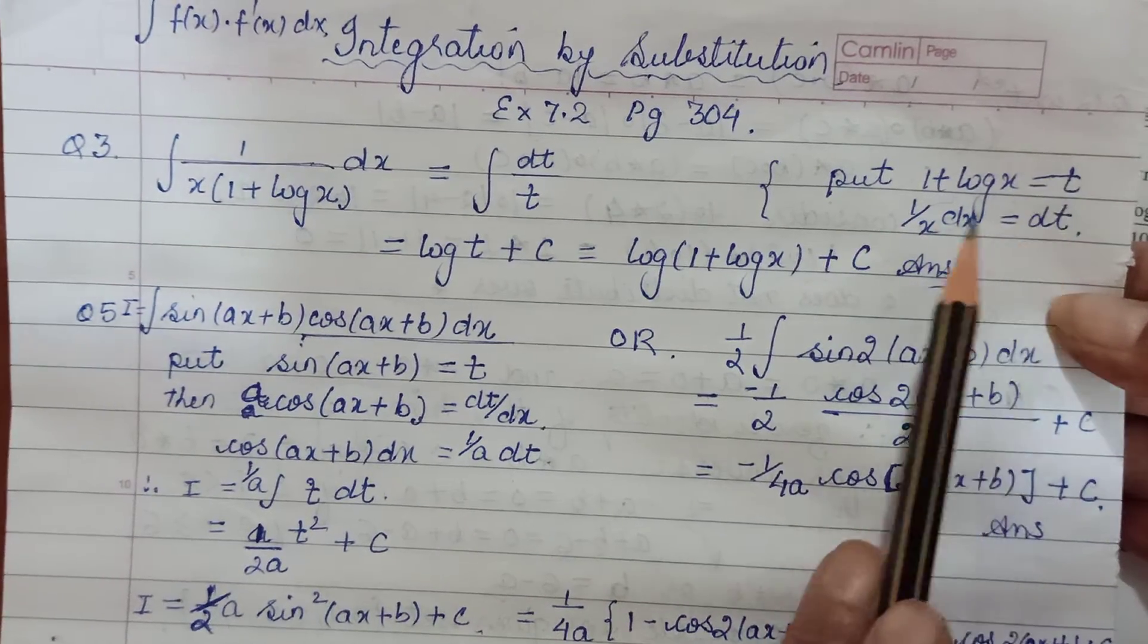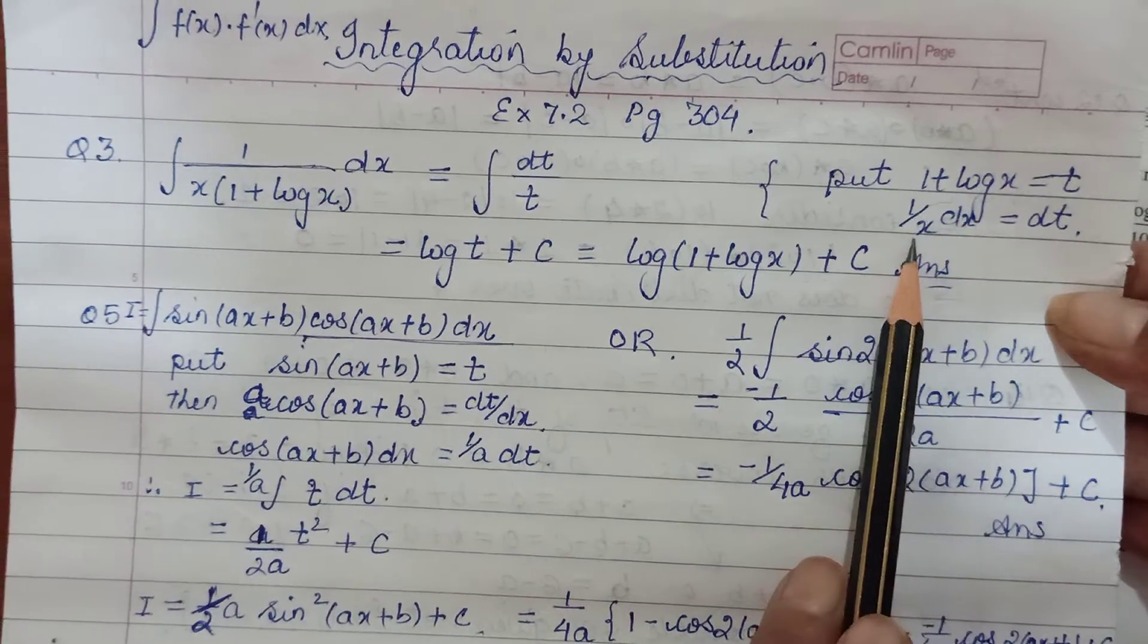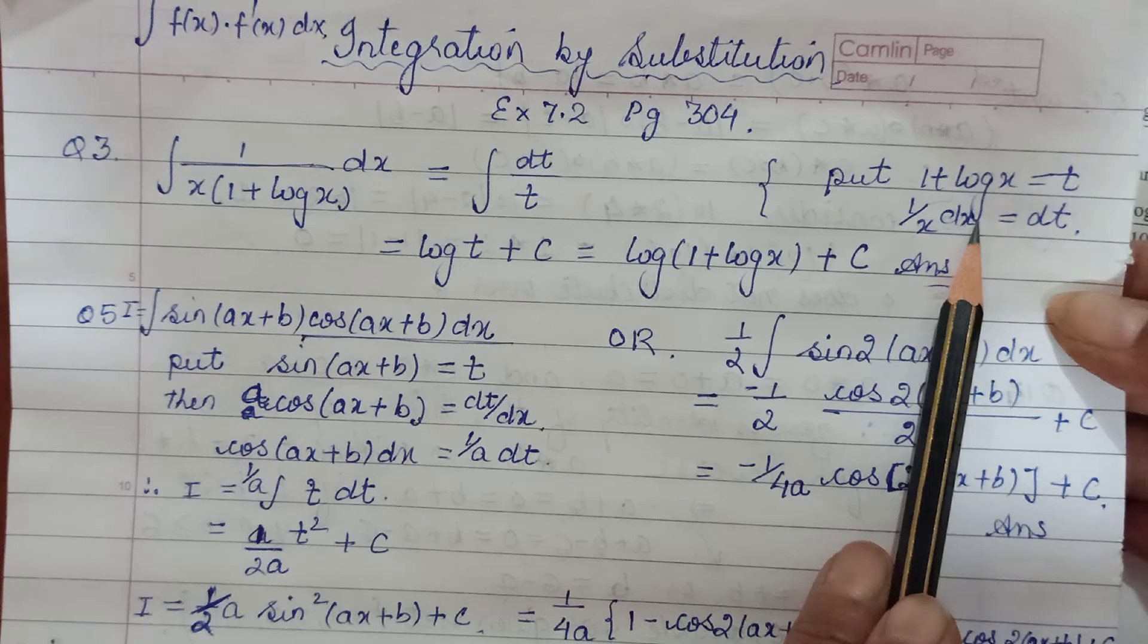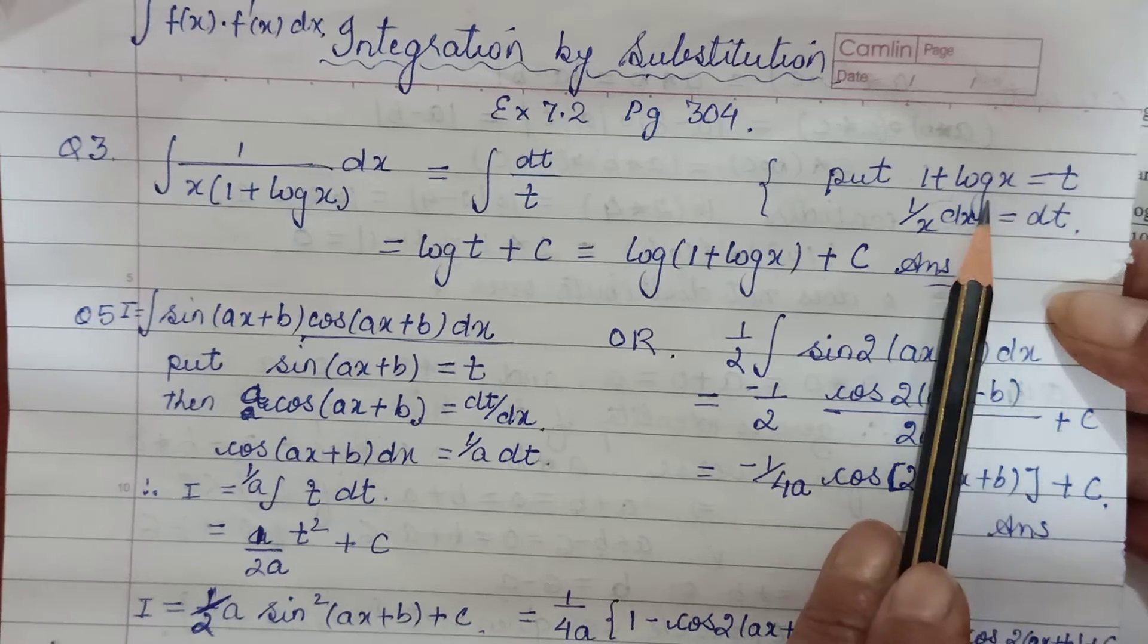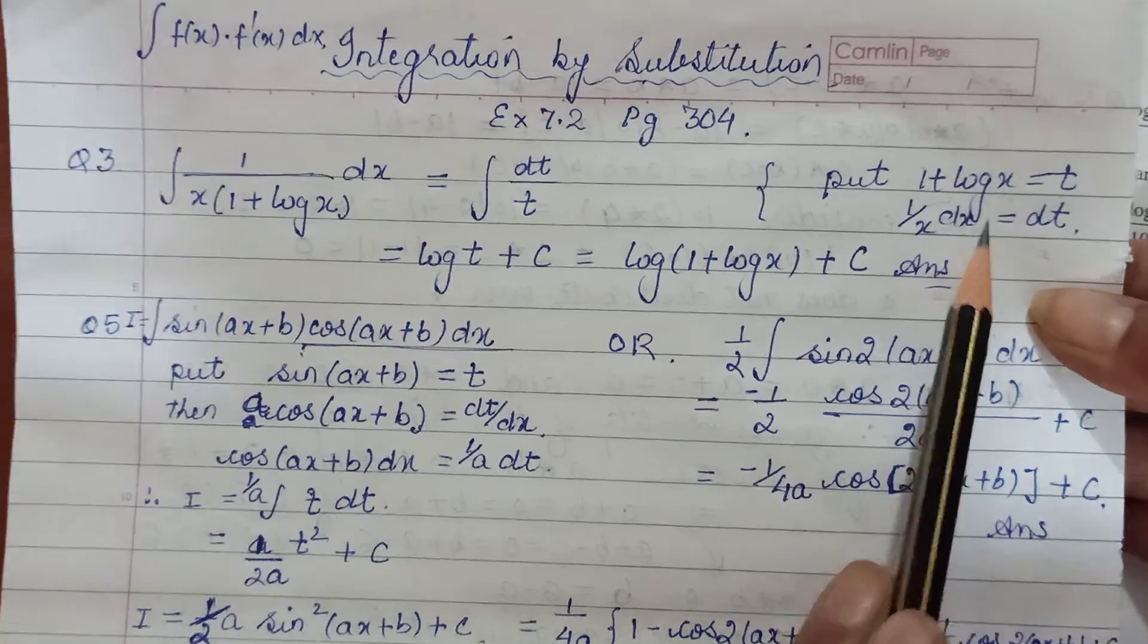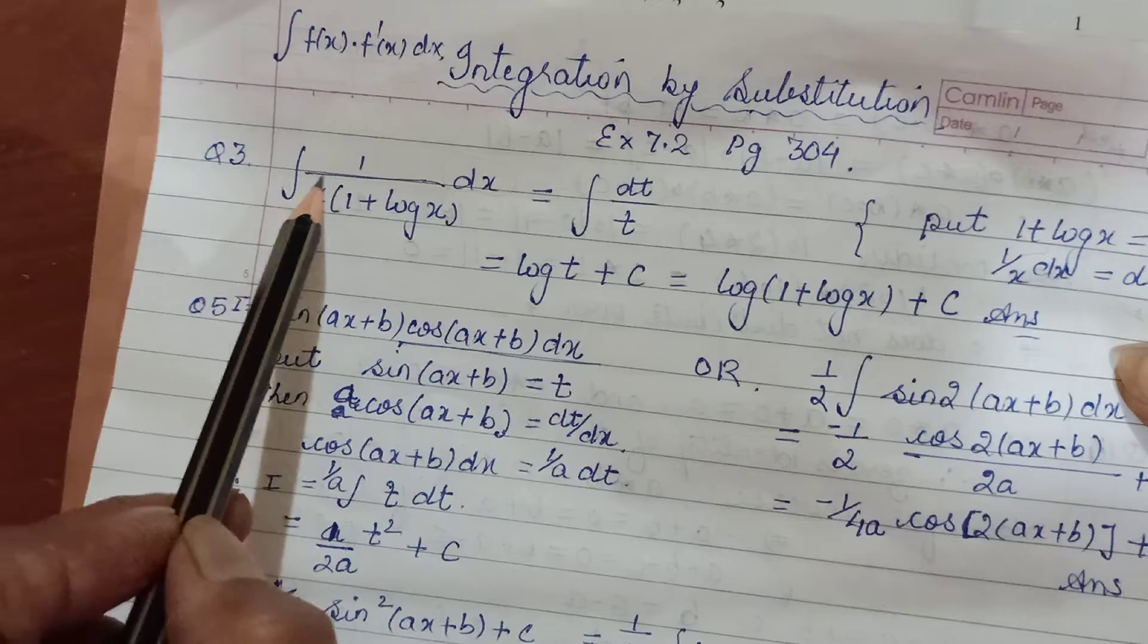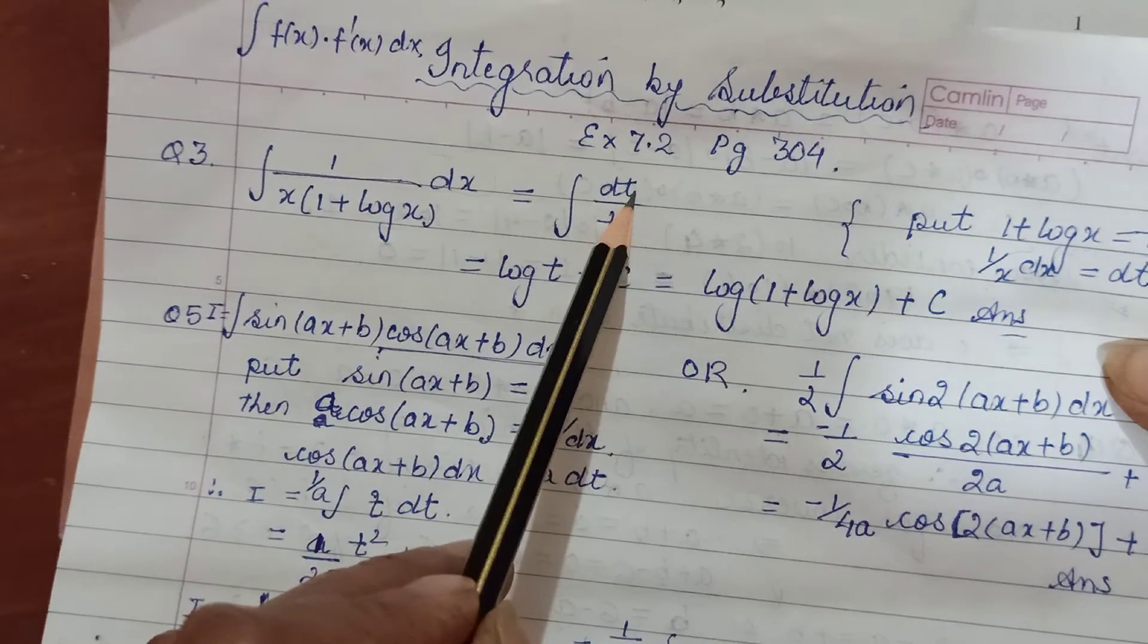dt upon dx, that dx I have cross multiplied here. Differentiating t with respect to x, t was a function of x, so dt upon dx is 0 plus 1 upon x. This dx I have cross multiplied here, why? Because in my expression I have dx upon x, which will be replaced by dt, and this pure ko mene already t bola hua hai.